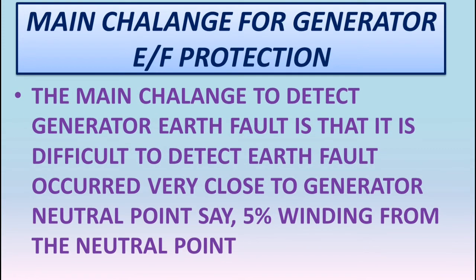What is the main challenge for generator earth fault protection? The main challenge is that it is very difficult to detect earth fault occurring very close to the generator neutral point. Suppose the earth fault has occurred at 5% from the generator neutral point — that may be very difficult to detect. Let's see why.